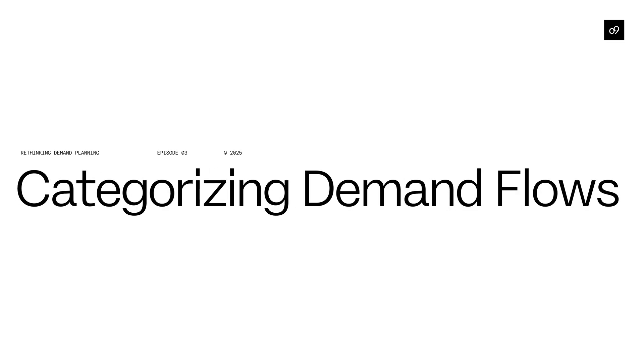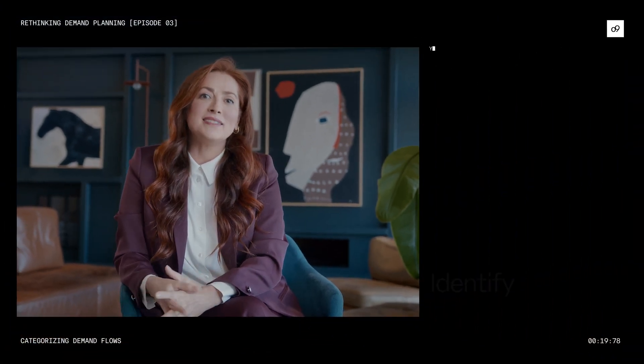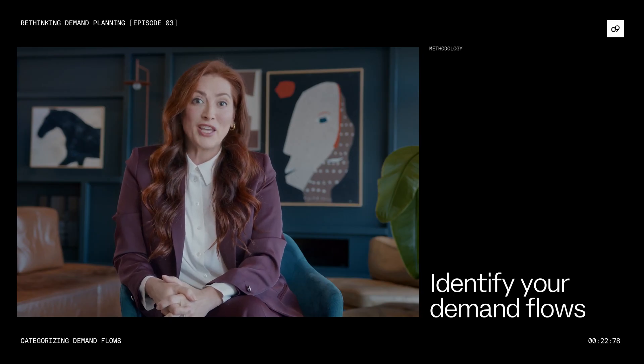Episode 3: Categorizing demand flows. As described in our prior video, companies do not have one demand flow — we find that typically there are five to seven distinct flows. Driving improvement begins by identifying your demand flows.